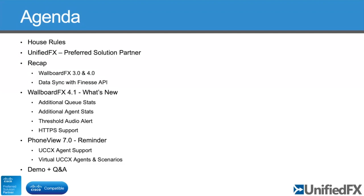In terms of what's new in this release, version 4.1, we've got some additional queue and agent stats — extra data we can now retrieve from the Finesse API that allows us to add that into the platform. There's a new threshold audio alert feature, which has been requested for quite a while, so it's good to finally get that delivered. The last point is that we've added HTTPS support.